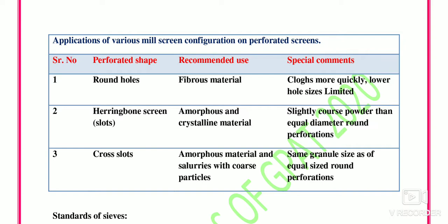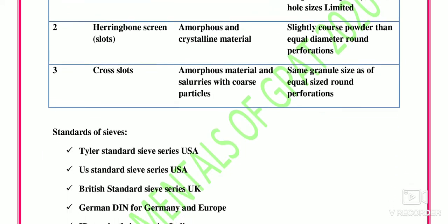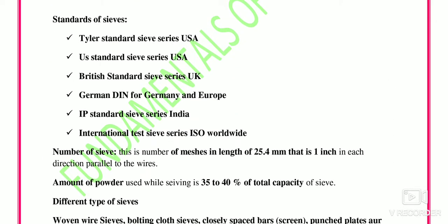The three perforated shapes are: round holes, herringbone screens, and cross slots. Round holes are used for fibrous material. Herringbone screens are used for amorphous and crystalline material. Cross slots are used for amorphous material and slurries with coarse particles. Round holes clog more quickly and have a lower hole size limit than herringbone. Herringbone gives slightly coarser powder than equal diameter round perforations, while cross slots give the same granule size as equal size round perforations.